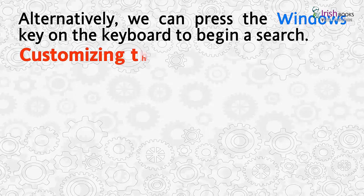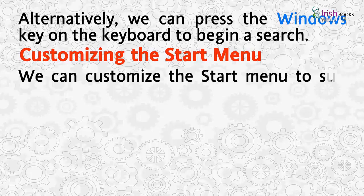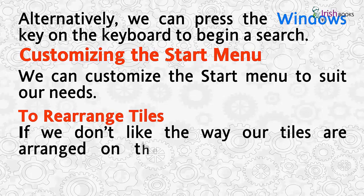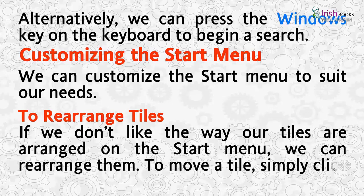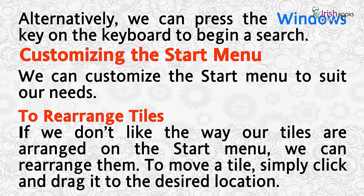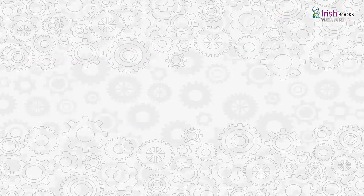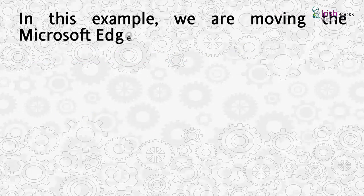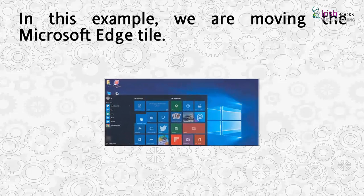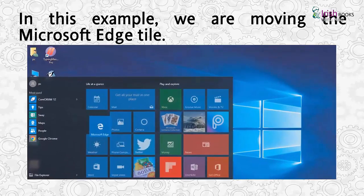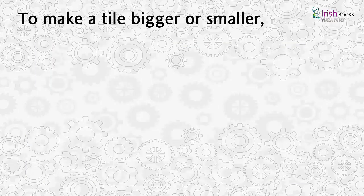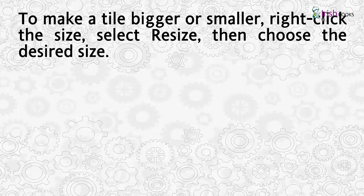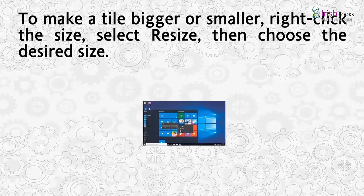Customizing the Start menu: We can customize the Start menu to suit our needs. To rearrange tiles, if we don't like the way our tiles are arranged, we can rearrange them — simply click and drag a tile to the desired location. For example, we can move the Microsoft Edge tile. To make a tile bigger or smaller, right-click the tile, select Resize, then choose the desired size.